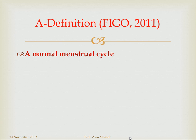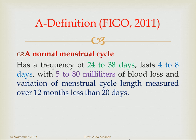According to FIGO 2011, the normal menstrual cycle has a frequency of 24 to 38 days, lasts 4 to 8 days, with 5 to 80 milliliters of blood loss, and variation of menstrual cycle length measured over 12 months of less than 20 days. This is the new definition for the normal menstrual cycle.